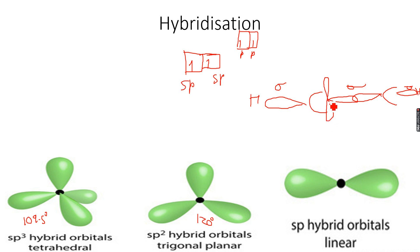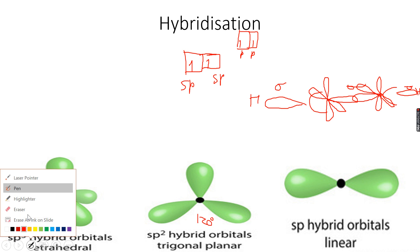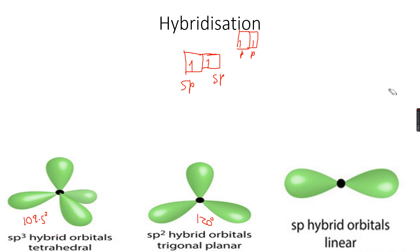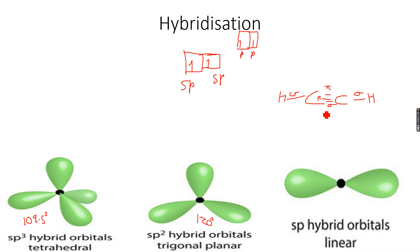The remaining P orbitals overlap sideways to form pi bonds. For SP hybridization you don't need to know how to draw these orbitals — I'll just tell you what we get as a result. We get a sigma bond here, a sigma bond here, a sigma bond here, and then two pi bonds. So to summarize: all single bonds are sigma bonds; in a double bond, we have one sigma and one pi; in a triple bond, we have one sigma and two pi. Just remember that.